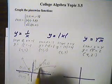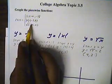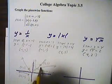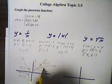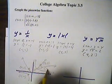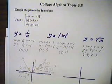So 4 comma 2 for this curve right here will be right here. It'll be closed because of the bracket. So closed, and that's 4 comma 2.